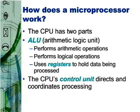A processor with a 32-bit word size, for example, has 32-bit registers, processes 32 bits at a time, and is referred to as a 32-bit processor. Processors with a larger word size can process more data during each processor cycle, a factor that leads to increased computer performance. Today's personal computers typically contain 32-bit or 64-bit processors.